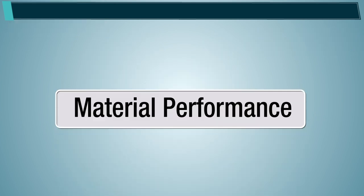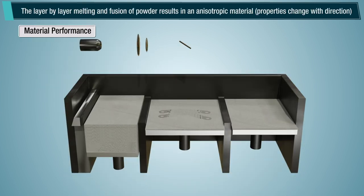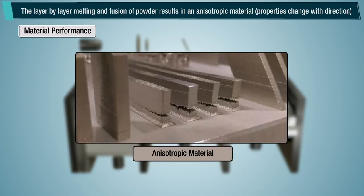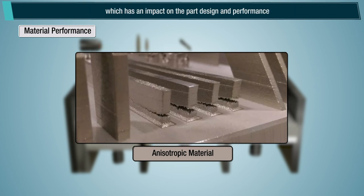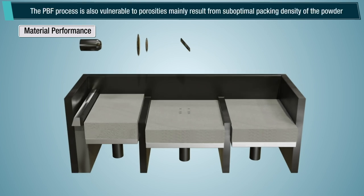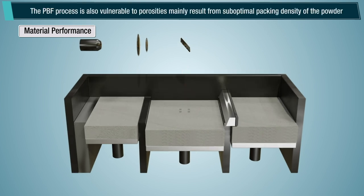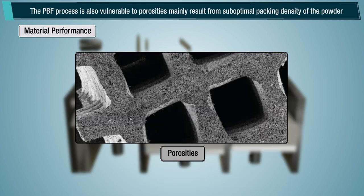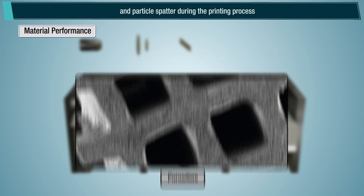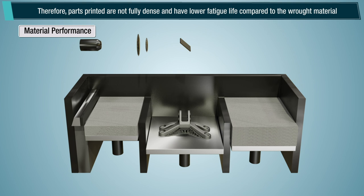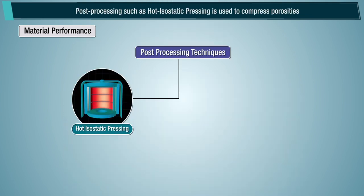The layer-by-layer melting and fusion of powder results in an anisotropic material — properties change with direction — which has an impact on part design and performance. The powder bed fusion process is also vulnerable to porosities, mainly resulting from suboptimal packing density of the powder and particle spatter during printing. Therefore, parts printed are not fully dense and have lower fatigue life compared to wrought material. Post-processing such as hot isostatic pressing is used to compress porosities.